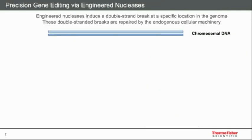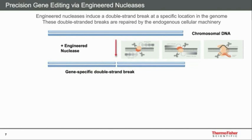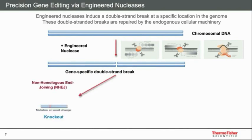Precision genome editing using engineered nucleases all follows the same basic principle: these engineered nucleases induce a double-strand break at a specific location in the genome, and these double-stranded breaks are then repaired by the endogenous cellular machinery. We can add our engineered nuclease — whether a zinc finger nuclease, a TALEN, or a CRISPR-Cas9 — to a double-stranded piece of DNA and get a resulting double-stranded break. Once this break occurs, it can go through two different pathways: non-homologous end-joining or homologous recombination.